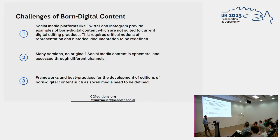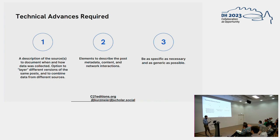Accessing this data through different avenues gives you different levels of data access. For example, if you look at an Instagram post in your browser, you cannot see the exact number of likes, whereas querying through the API gives you the exact number. If the user exports their own data and hands it over to us — as has happened in this project — you get yet another layer of data access. The way you access your data greatly informs the depth and range of data you'll be working with, and that is important for representation. According to all this, we need frameworks and best practices for the development of these editions.